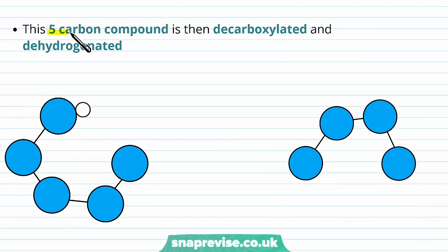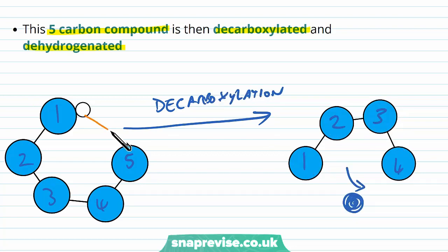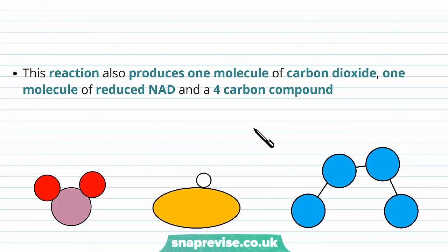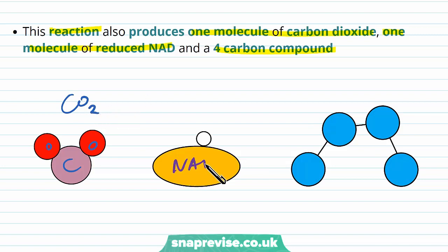In the next stage, the five-carbon compound is again decarboxylated and dehydrogenated — kind of a repeat of the last process. In decarboxylation, we remove another carbon group to leave now a four-carbon compound. And again with dehydrogenation, we're making another reduced coenzyme. So this reaction, just like the last one, produces one molecule of carbon dioxide, one molecule of reduced NAD, and this time a four-carbon compound. We've got our CO2 as a waste product, our NAD coenzyme which has taken that hydrogen away, and we now have a four-carbon compound.